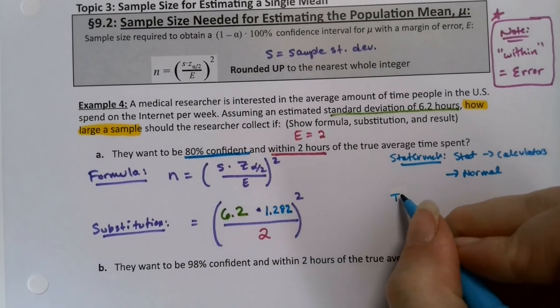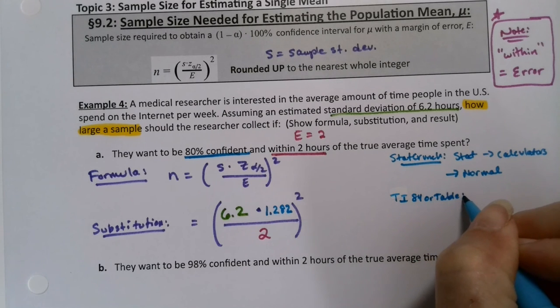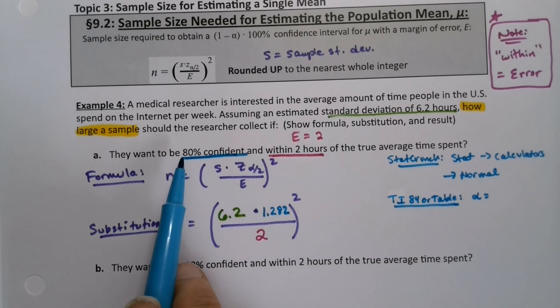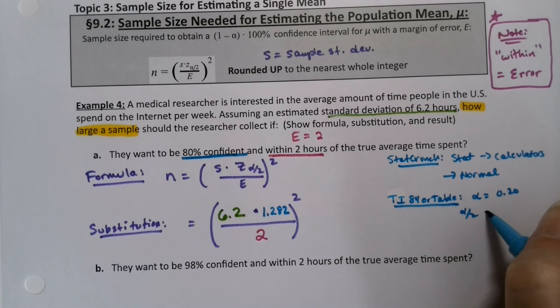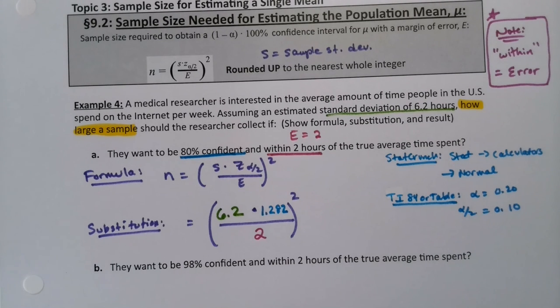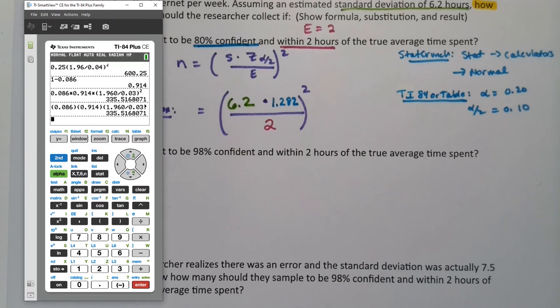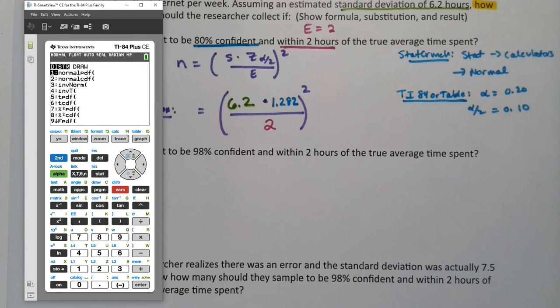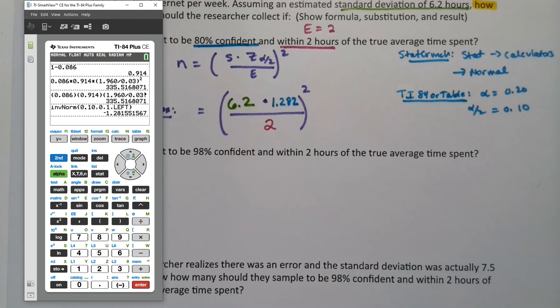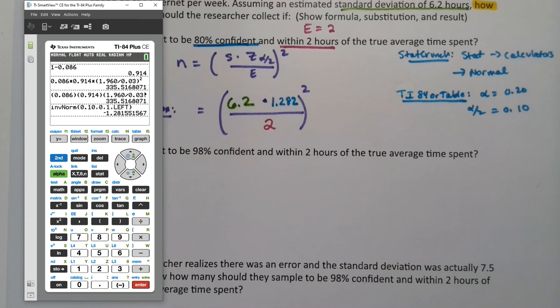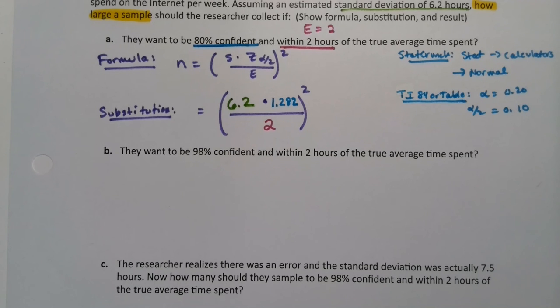If you want the table, or the TI-84, you would need alpha, which is the complement, which is point two zero. So alpha over two is point one zero. You go to the point one zero column, drop to the bottom to the z's, and it's 1.282. On the calculator, we do inverse norm. So second distribution, number three, which is inverse norm, 0.10. I do the left because that's the standard one that most people have. Most people don't have the option of center. If you have the option of center, you could always do what we did in StatCrunch, which is point eight zero and then center.